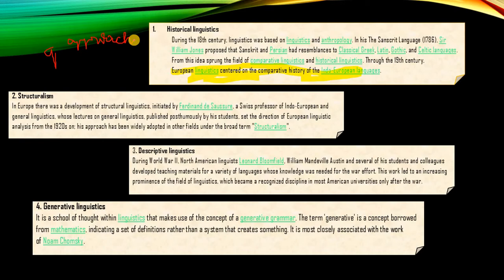Ferdinand de Saussure was teaching historical linguistics at Geneva University, whose lectures were mainly on general linguistics. His students shaped the direction of European linguistics analysis from the 1920s onward, through the publication of the book Cours de Linguistique Générale — a collection of the different lectures presented by Professor Ferdinand de Saussure.